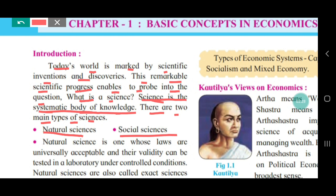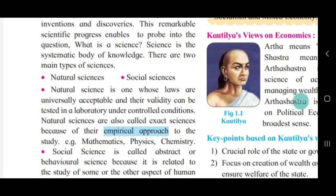There are two main types of science: Natural Science and Social Science. Natural science is one whose laws are universally acceptable and their validity can be tested in a laboratory under controlled conditions. Natural science is also called exact science because of its empirical approach. Examples include mathematics, physics, and chemistry.